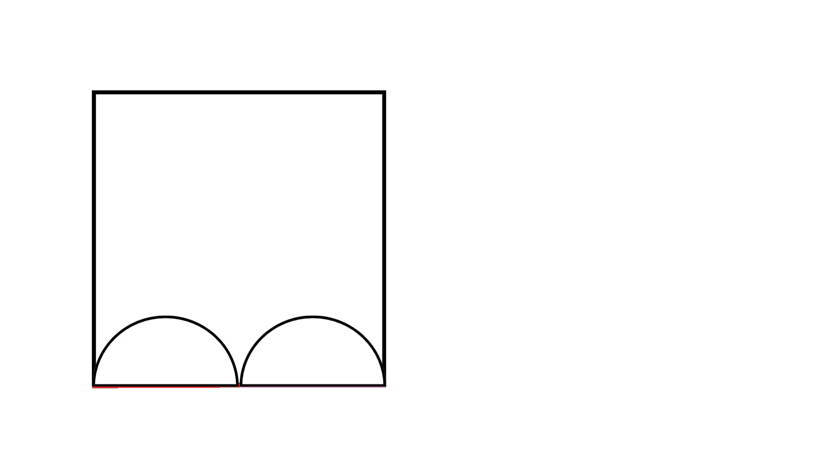In the upper portion of the square we inscribe a large circle that satisfies these two conditions. First, it touches the top side of the square. Second, it touches both the bottom semicircles.